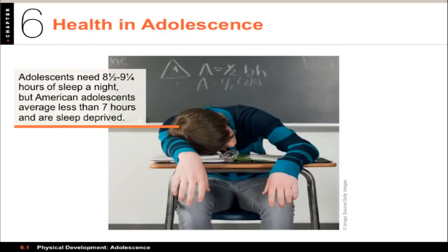A recent study found that 18% of American adolescents have at least one health problem. One very common issue is sleep deprivation. Adolescents need anywhere between eight and a half to nine and a quarter hours of sleep per night — nine should be the goal. Many average less than seven hours per night. Lack of sleep makes it more difficult to pay attention in school, increases the risk for car accidents, and raises irritability, risk for depression, and poor impulse control.